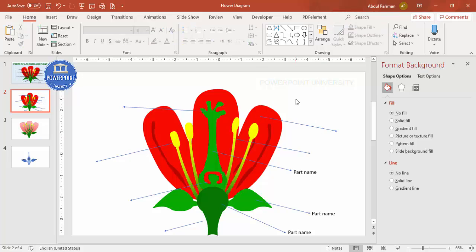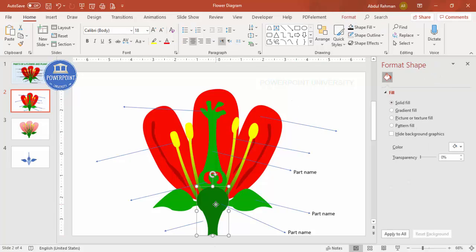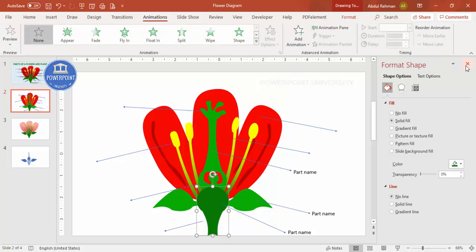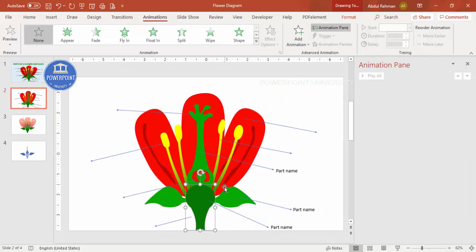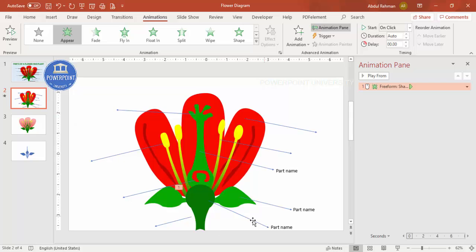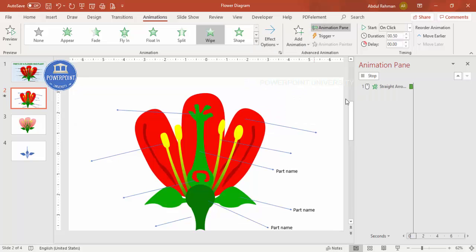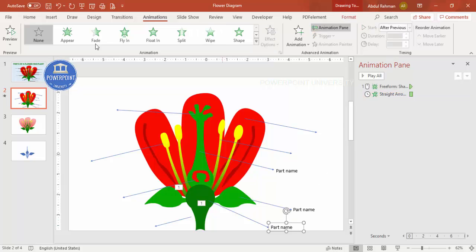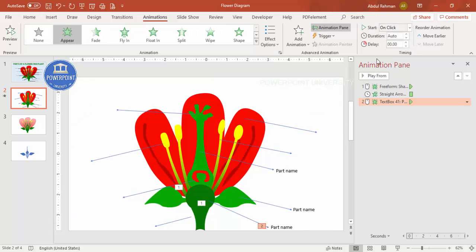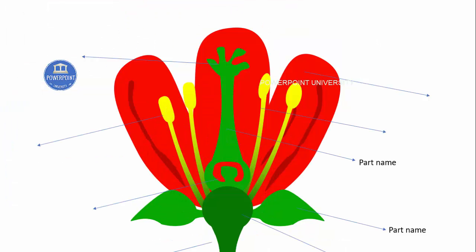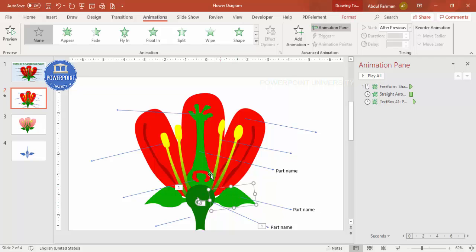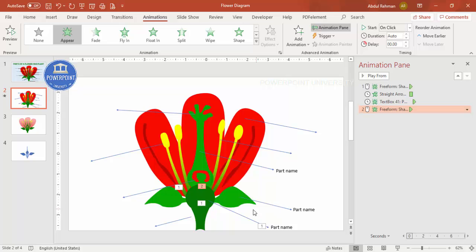To add animation, select a shape, go to Animations, and enable the Animation Pane. Apply an 'Appear' effect to the shape, then use a 'Wipe from Left' effect on the arrow, set to 'After Previous'. The label should also appear after previous. When you click during the slideshow, each part and its label will appear in sequence. You can add this animation one by one for all parts and present it for school or college presentations.